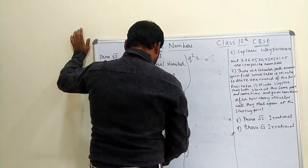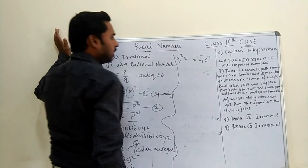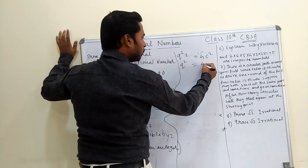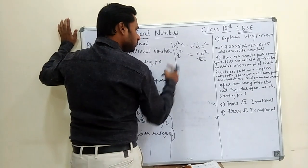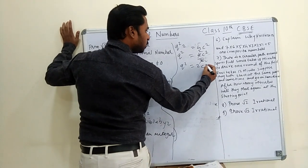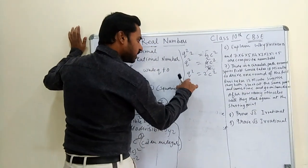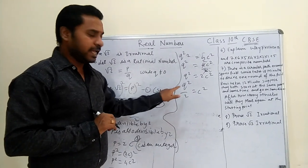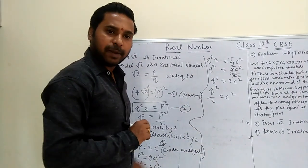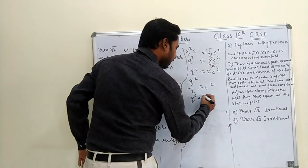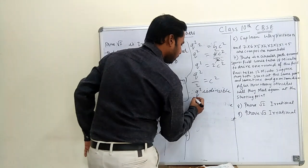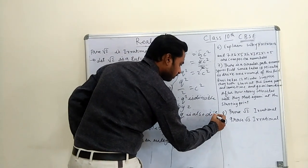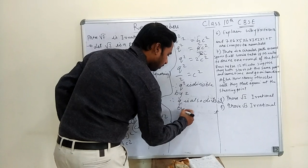We have 2q² = 4c², which gives q² = 4c²/2 = 2c². This means q² is divisible by 2, therefore q is also divisible by 2. If 2 divides q², then 2 also divides q.